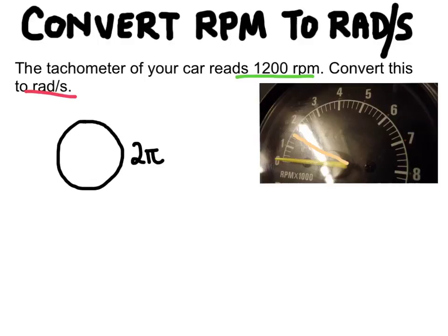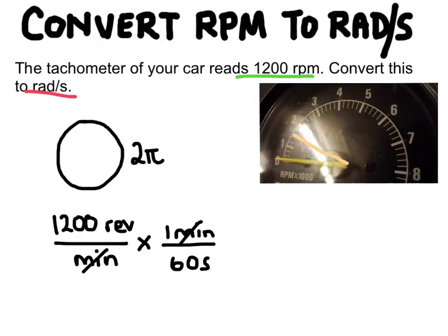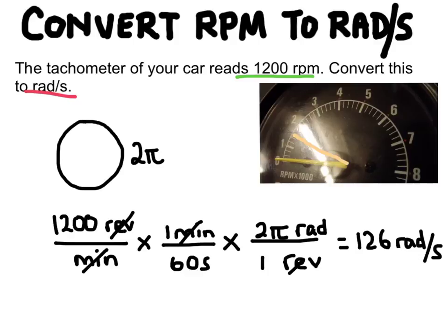And so to convert our RPM I'd have 1200 revolutions per minute. And I'm going to convert the minutes into seconds. There are for every one minute going to be 60 seconds. And so the minutes will cancel because they're on opposite sides of the fraction there. And then I can convert the revolutions into radians. And for every revolution there's going to be 2 pi radians. And so the revolutions will cancel and we end up with a speed of 126 radians per second. And so there's our SI units. Okay, so that's angular speed.